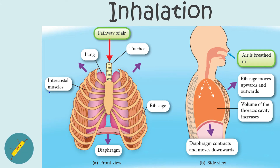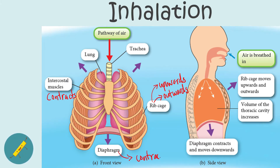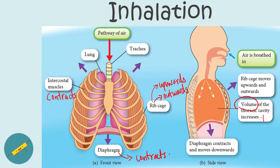During inhalation, the intercostal muscles contract. This causes the ribcage to move upwards and outwards. At the same time, the diaphragm also contracts. The diaphragm will move downwards and become flat.